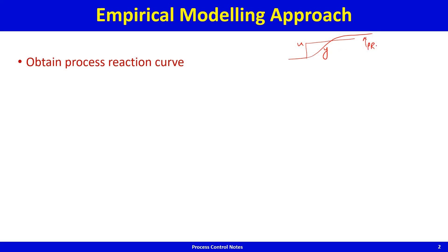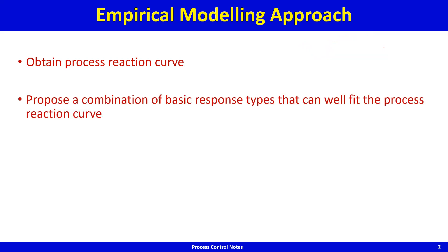We obtain the process reaction curve and then propose a combination of basic response types that can well fit it. The basic response types we have looked at are the first order lag, the second order over-damped, under-damped, critically damped, pure gain, pure dead time, and things like that. We combine them so that all the essential characteristics of the response shape are well captured.